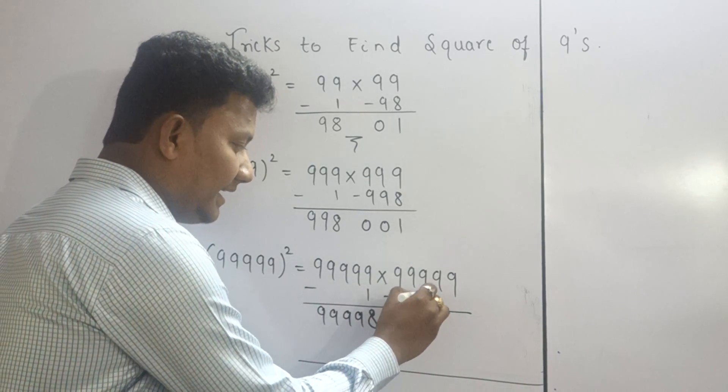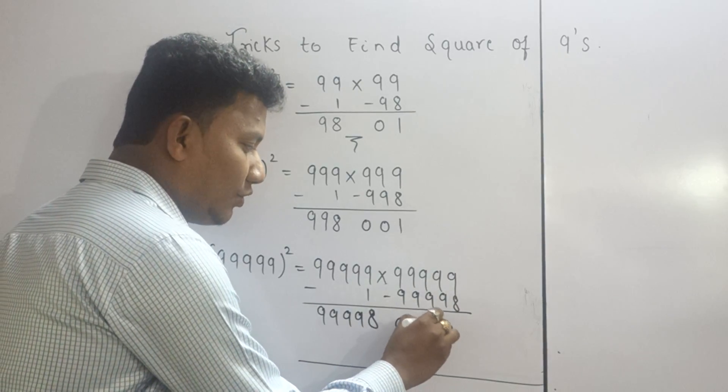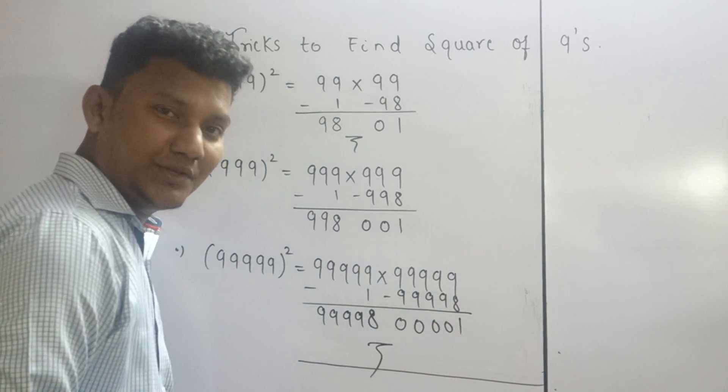Take this number, subtract with 99998. So this will be 00001. That's it. So we got the answer.